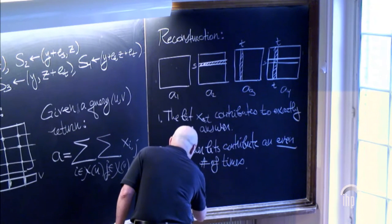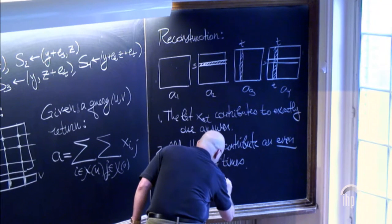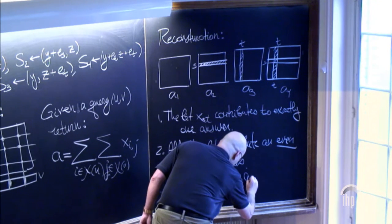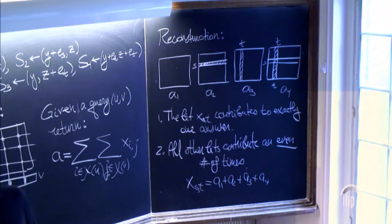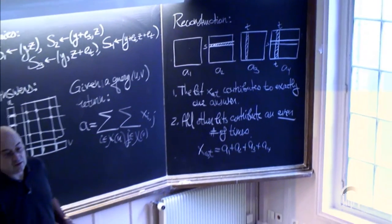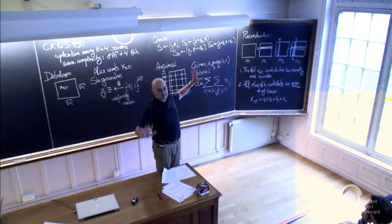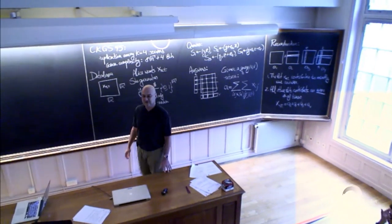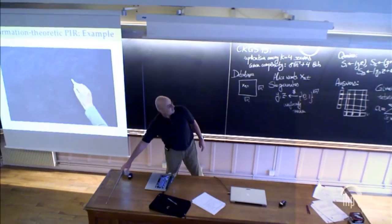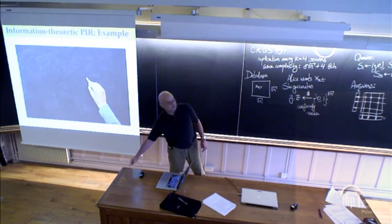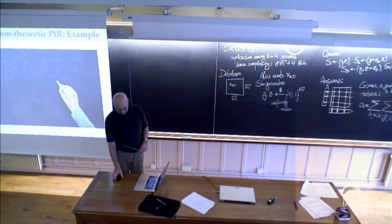If you believe claims 1 and 2, then the bit we want to retrieve is just the sum modulo 2 of the four answers. So we observe three steps: query generation, computing the answers, and reconstruction.